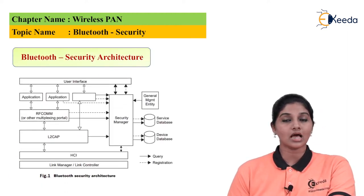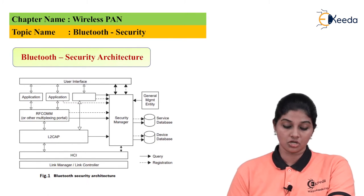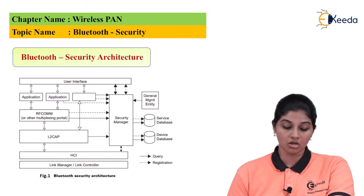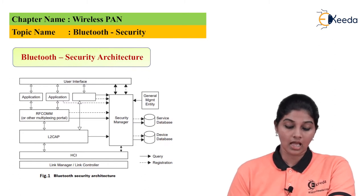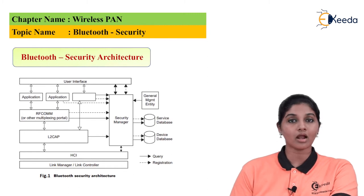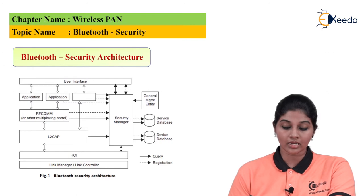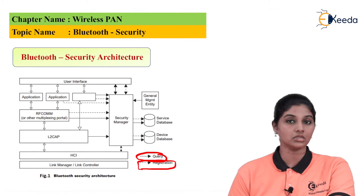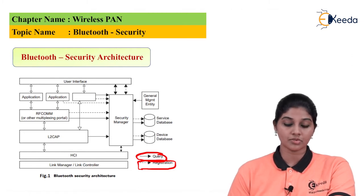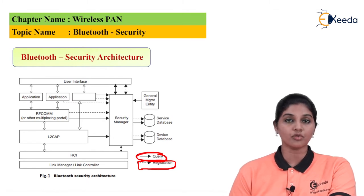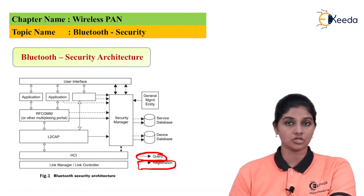Now let's look at the Bluetooth security architecture. The architecture consists of a link manager or link controller, HCI, and L2CAP. A layered architecture is used. Dotted lines indicate the registration process, and solid arrows indicate queries. Device database and service database are used for query and registration information, and the security manager provides the entire security process.